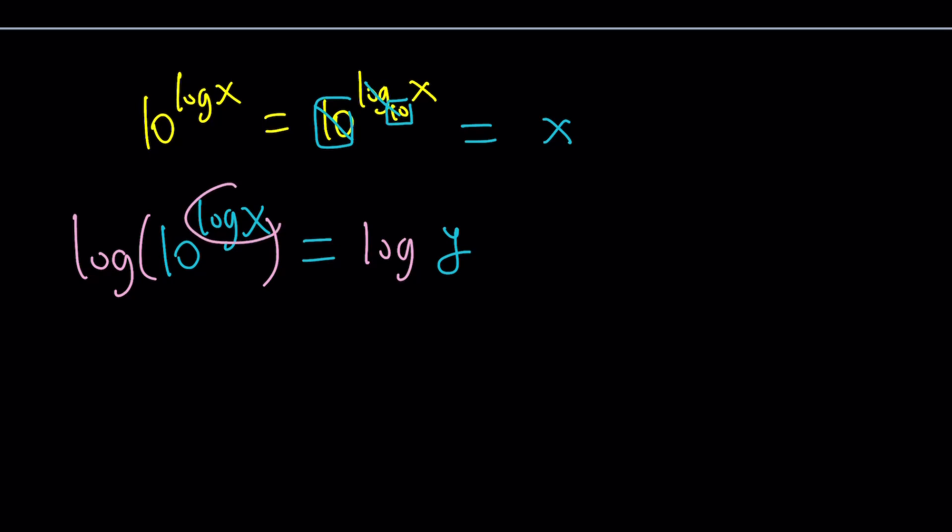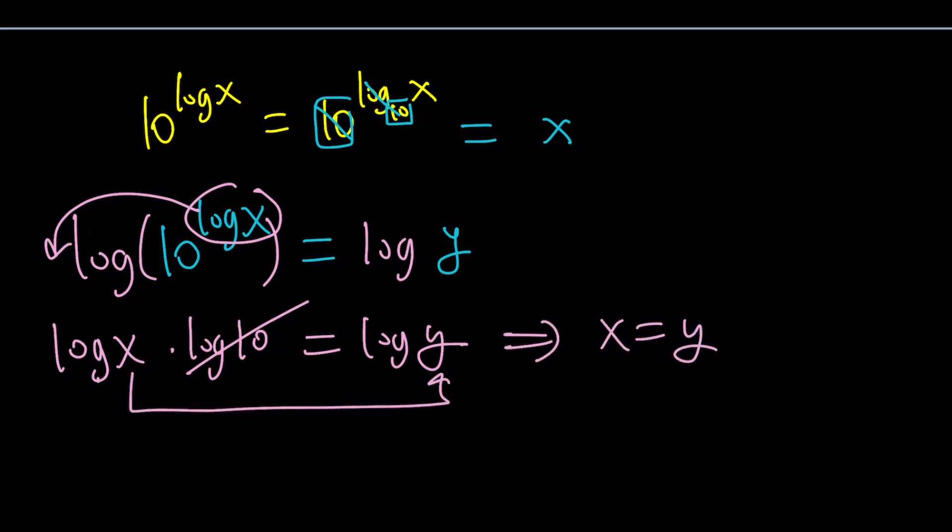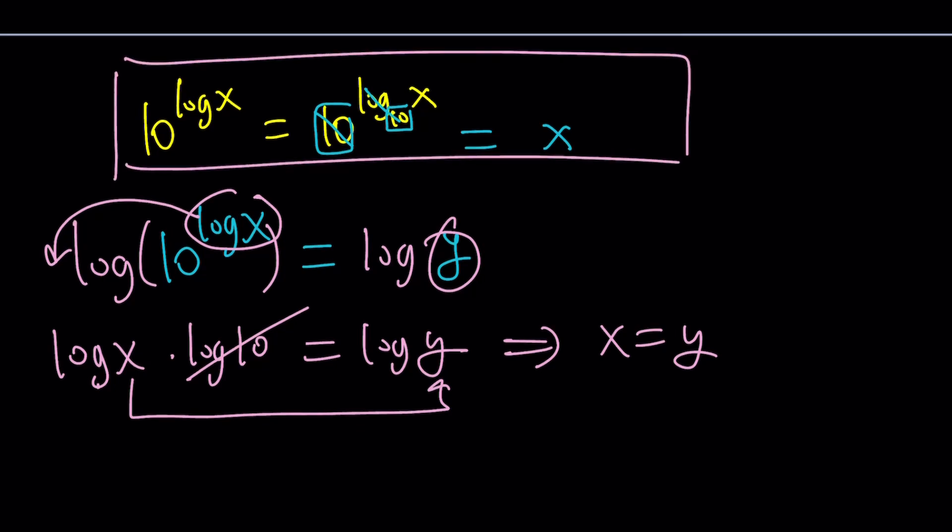Now you go ahead and move this to the front. Log x multiplied by log 10 equals log y. And then log 10 is one, so we can totally forget about it. And log x equals log y, and that just implies x equals y, or y equals x. So whatever you called y is the same thing as x. In other words, 10 to the power log x is equal to x. Okay, make sense? Great. So that's a really nice shortcut, and that's what we're going to use here.